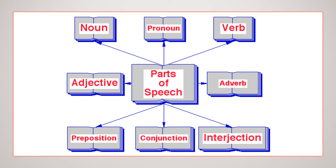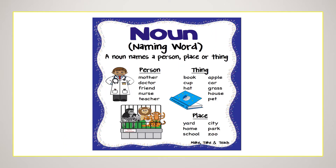There are total 8 parts of speech in English: noun, adjective, verb, adverb, pronoun, preposition, conjunction and interjection. So let's start with the first part of speech, that is noun.